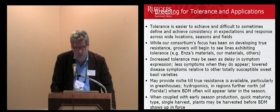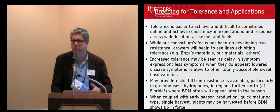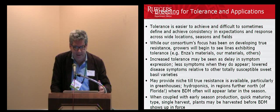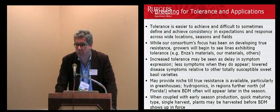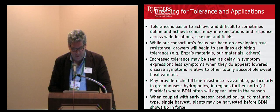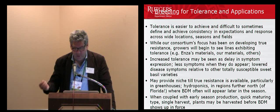Tolerance is easy to achieve and really difficult to sometimes define. It's difficult to achieve consistency and expectations across wide locations, seasons, and field conditions. Our consortium focus has not been on developing tolerance — it's been on developing resistance. But growers and all of us have to begin to see what potential application a tolerant or intermediate resistance line has until better things come on board. In some greenhouses and hydroponics, these types of tolerant plants could provide some good protection.